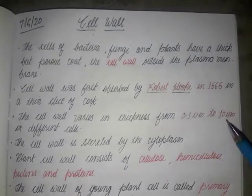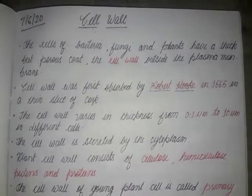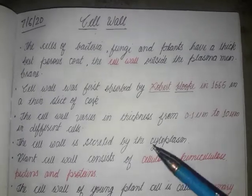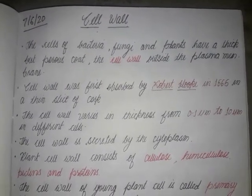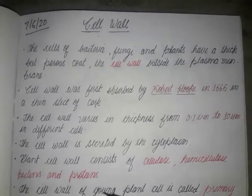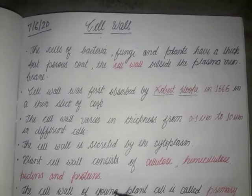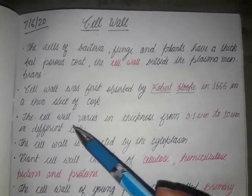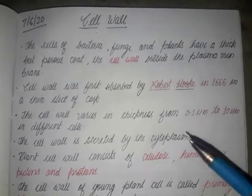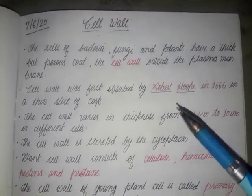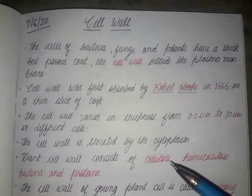The cell wall varies in thickness from 0.1 micrometers to 10 micrometers in different cells. If we talk about plant cells, there are different types of cells such as tracheids, vessels, and parenchyma cells. When we study tissues, you will learn how to identify different tissues and cells in plants, and their thickness varies according to function.